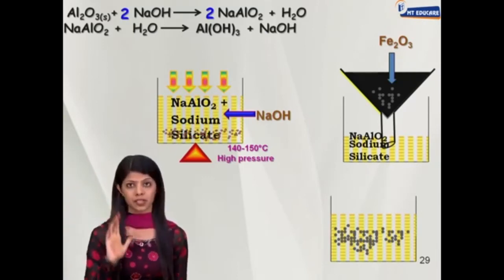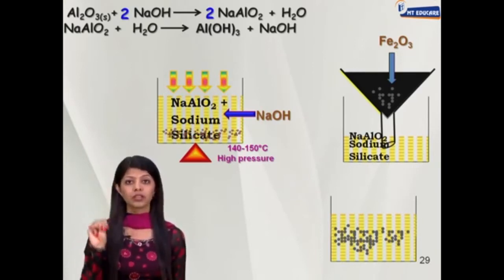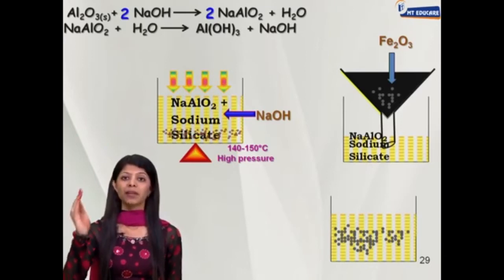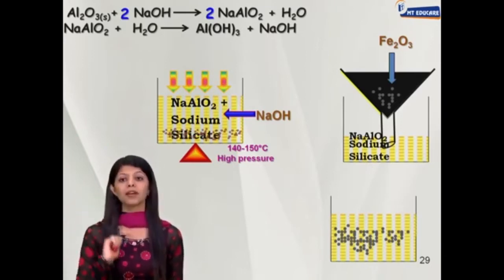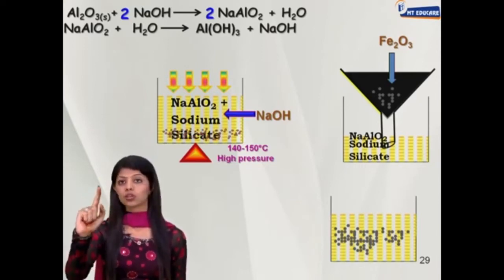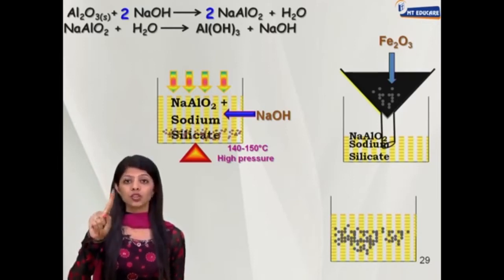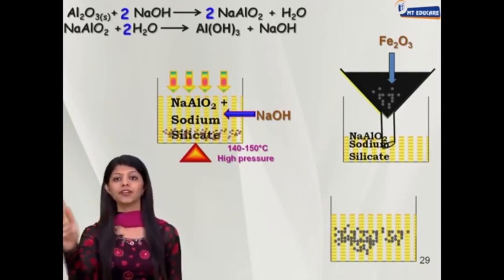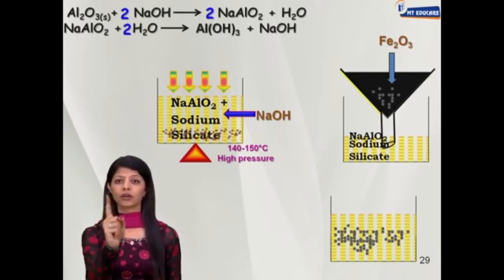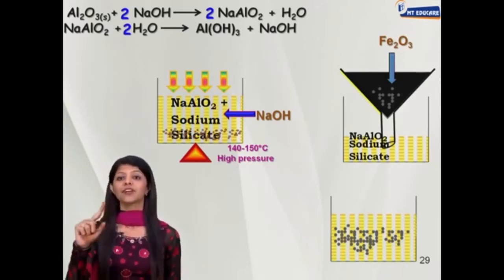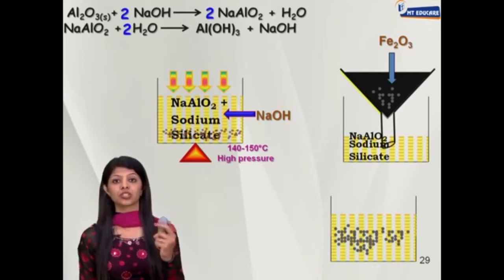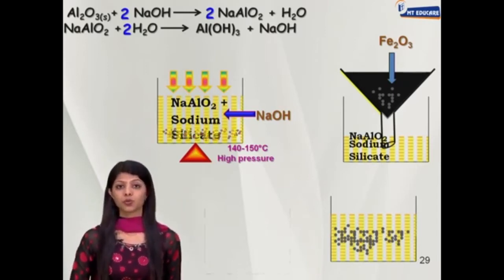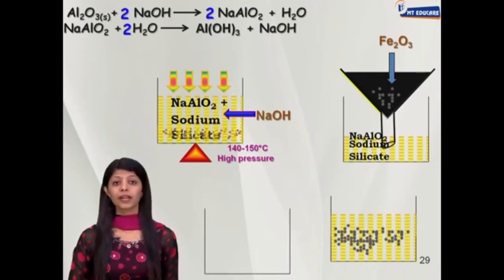Let's balance the second reaction: NaAlO₂ + 2H₂O → Al(OH)₃ + NaOH. Sodium: 1 on each side. Aluminium: 1 on each side. Oxygen: left side 2 + 2 = 4 — but wait, left side has 2 (from NaAlO₂) + 2×1 = 4; right side 3 + 1 = 4. Hydrogen: multiply water by 2 giving 4H on left; right side 3 + 1 = 4. The reaction is balanced.